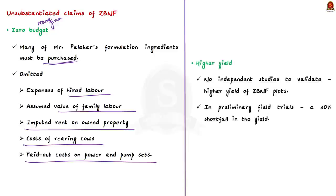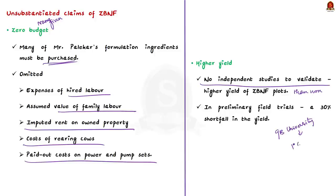Secondly, there are no independent studies to validate claims that zero budget natural farming plots have higher yield than non-ZBNF plots. One field trial is ongoing at GB Pant University of Agriculture and Technology, but its full results will be available only after five years. However, preliminary observations have recorded a yield shortfall of about 30% in ZBNF plots compared to non-ZBNF plots.